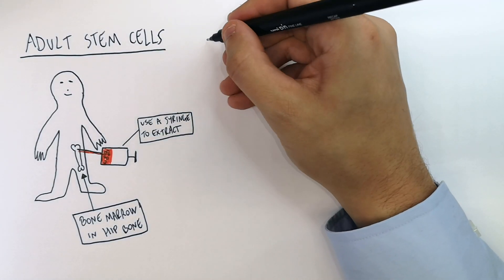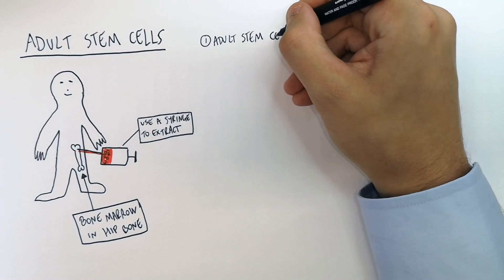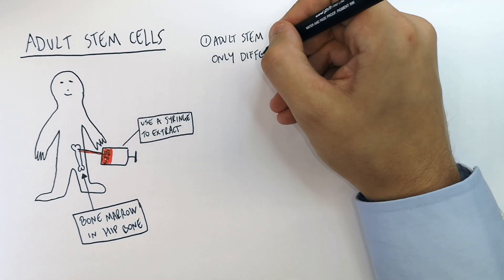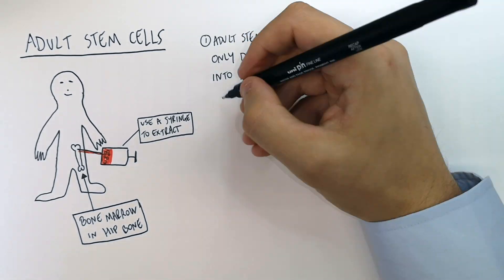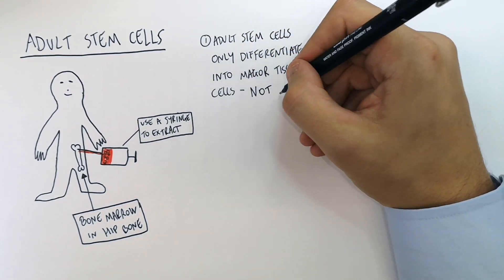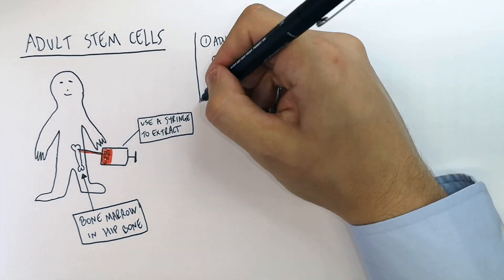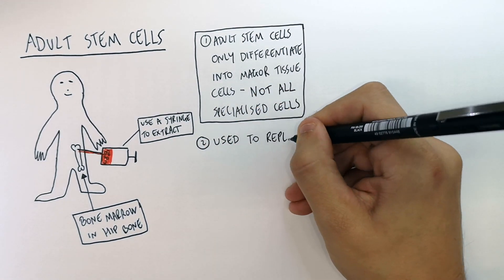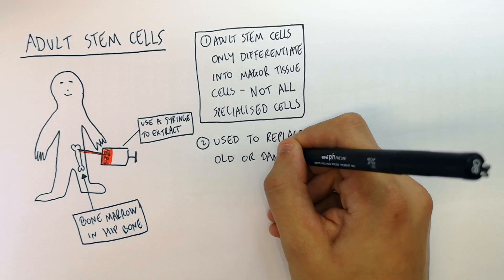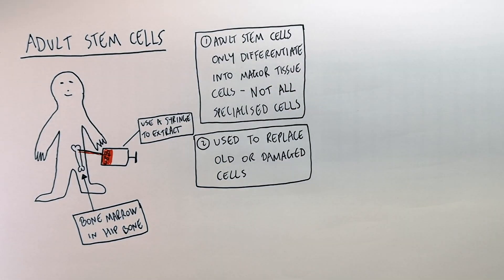Adult stem cells aren't perfect. Adult stem cells only differentiate into major tissue cells, not all specialized cells. So they're used to replace old or damaged cells and to repair damaged tissues.